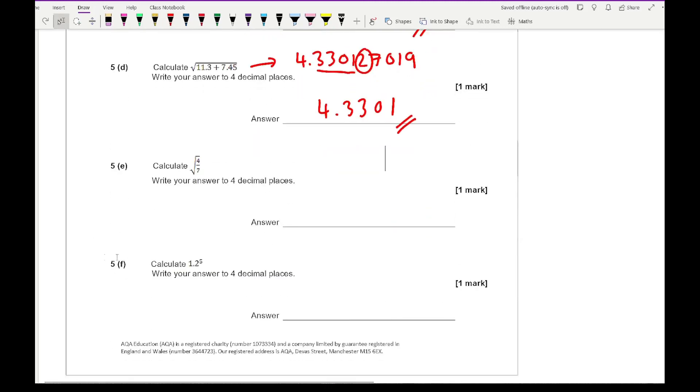Moving on to 5E, work out the square root of 4 over 7 to 4 decimal places. Working that on the calculator, I get 0.755928946. Rounding that to 4 decimal places gives 0.7559.